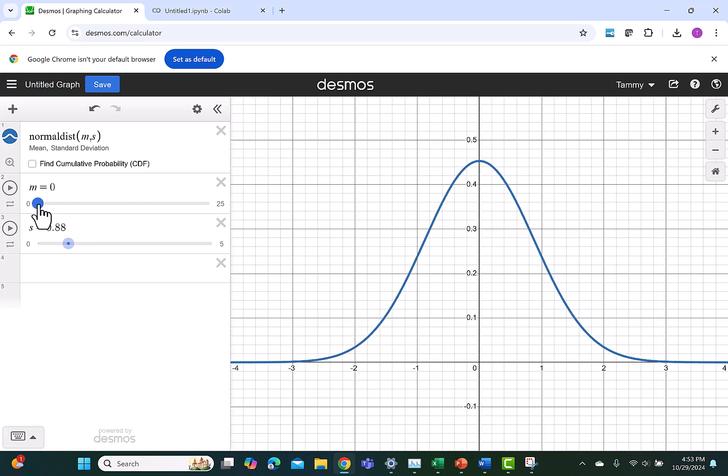When I change the value of the mean, I can see that the position of the mean moves. This then moves the center of the graph. As we continue to talk about normal distributions, we'll talk about how to graph the normal distribution using technology, but for now we're just looking at a quick introduction.